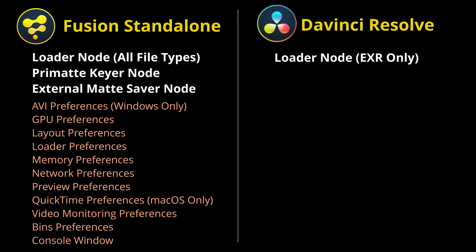Some of the main differences between the standalone and DaVinci Resolve version: one of the main ones is the loader node. Within the standalone, the loader node allows you to load all file types — any media file types. In DaVinci Resolve, we can only load EXRs with the loader node within Fusion.